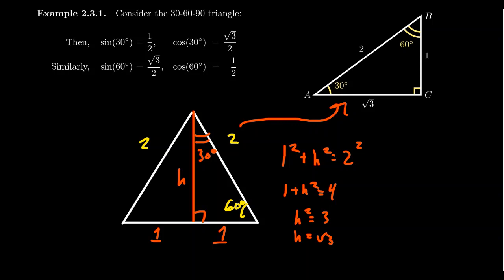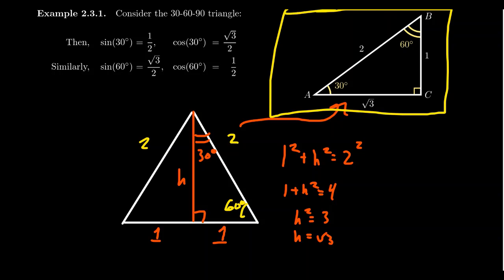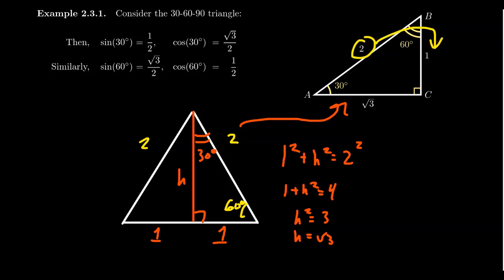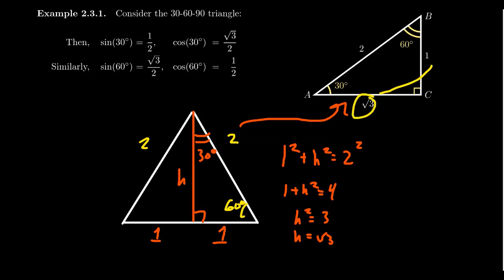An important observation when working with 30-60-90 triangles: since all such triangles are similar, they are all proportional to this standard one. The smallest side, always opposite the 30-degree angle, is exactly half of the hypotenuse. So if you know the short side, you double it to get the hypotenuse; conversely, you halve the hypotenuse to get the short side. Likewise, the medium side is the short side times the square root of three, and if you know the medium side, divide by the square root of three to get the short side.